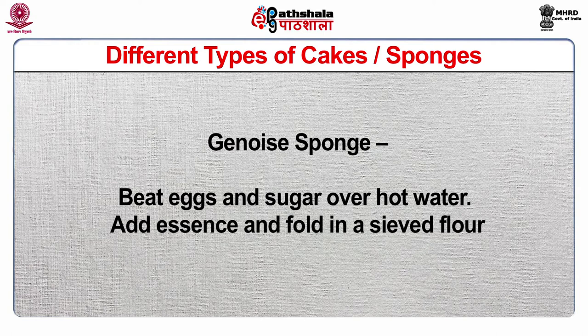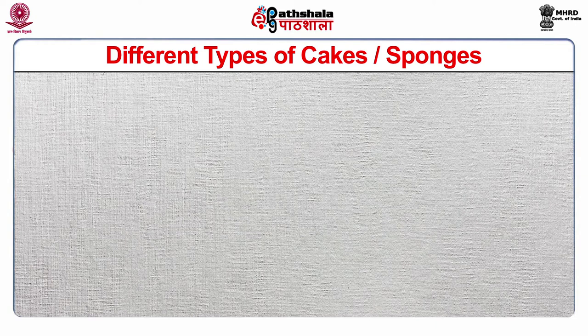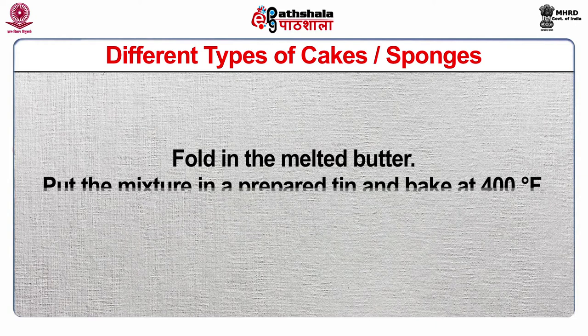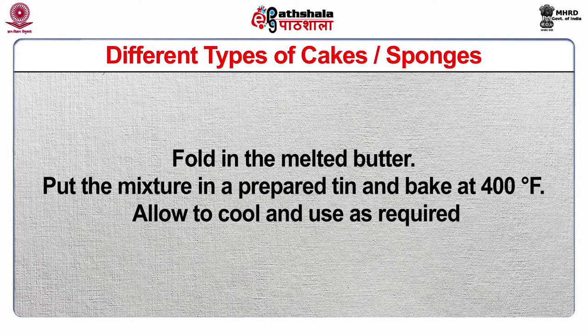Genoise sponge: beat eggs and sugar over hot water, add essence and fold in sieved flour, fold in the melted butter. Put the mixture in a prepared tin and bake at 400°F. Allow to cool and use as required.